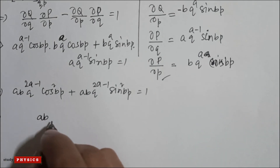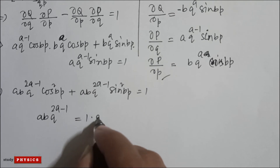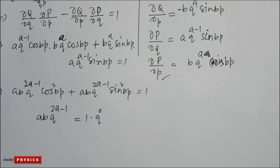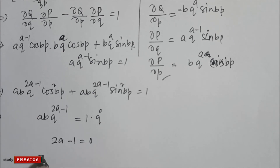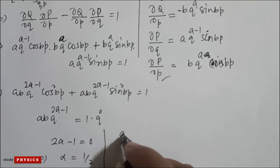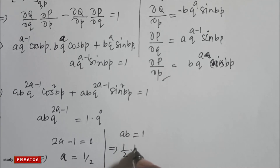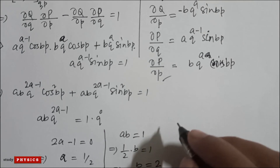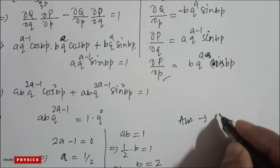Since ab·q^(2a−1) = 1 must hold for all q, we require 2a − 1 = 0, giving a = 1/2. Then ab = 1, so b = 2. The correct option is B.